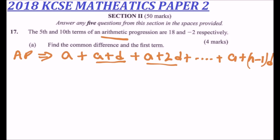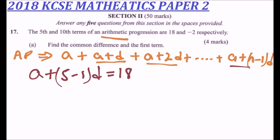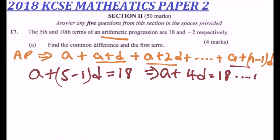We are told the 5th term is 18. Using the nth term formula, the 5th term is a plus 5 minus 1 multiplied by d, which equals 18. This gives us a plus 4d equals 18. We can call this equation one.